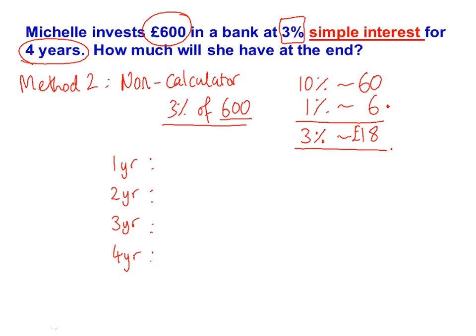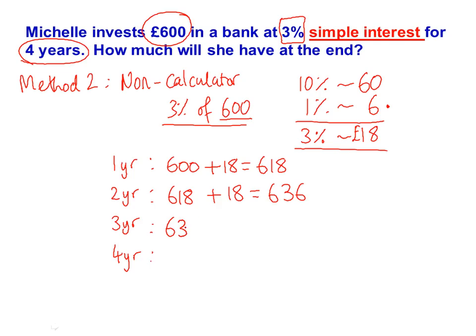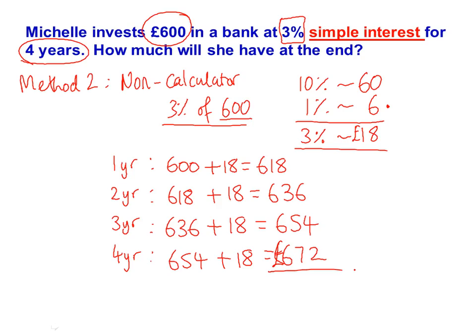Every year the money will go up by £18. The first year: 600 plus 18 equals 618. The second year: 618 plus 18 equals 636 — because every year it goes up by £18. The third year: 636 plus 18 equals 654. The fourth year: 654 plus 18 equals £672, which is our answer. So after four years at 3% simple interest, Michelle will have £672.